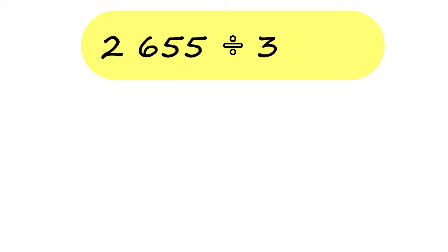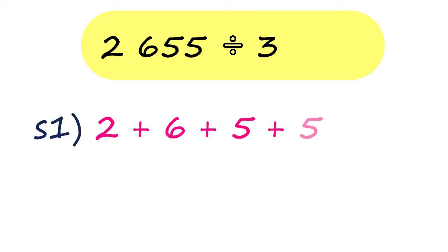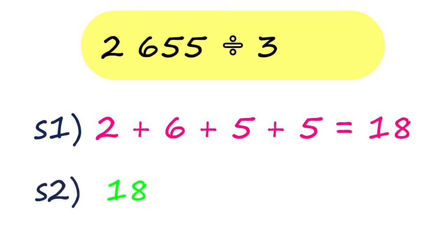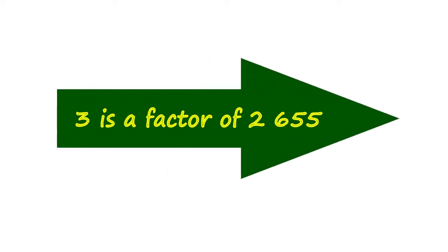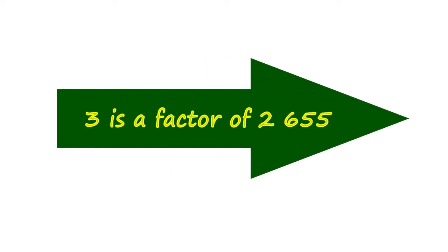Let's try another number — how about 2,655? Step 1: The sum of the digits of 2,655 is 18. Step 2: Let us divide 18 by 3. The quotient is 6. 2,655 is divisible by 3 because the sum of its digits could also be divided by 3. 3 is a factor of 2,655.